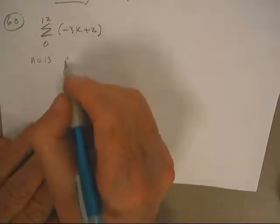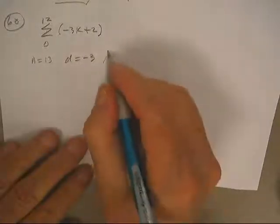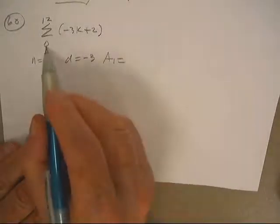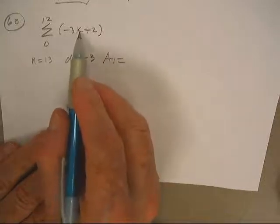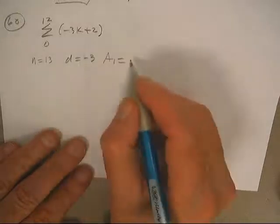The common difference is sitting there, staring at us, that's negative three. The first term is, put zero in, negative three times zero, zero, zero plus two is two.